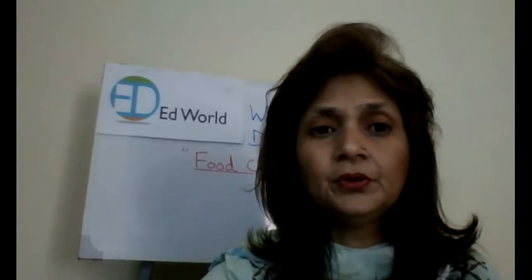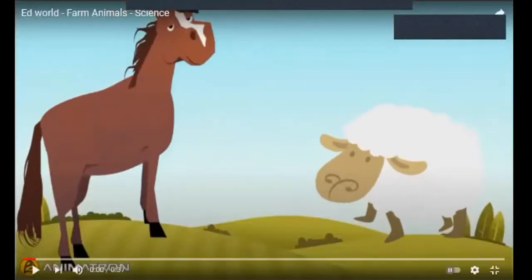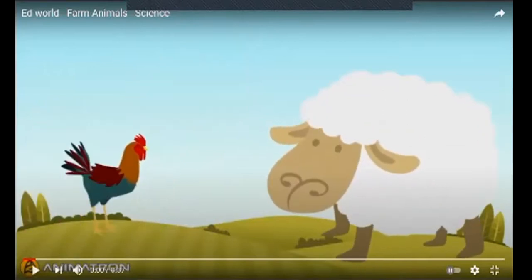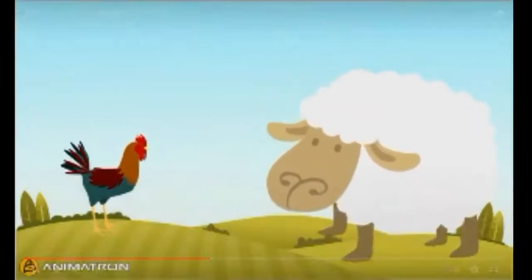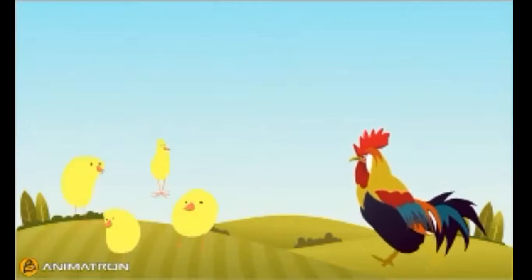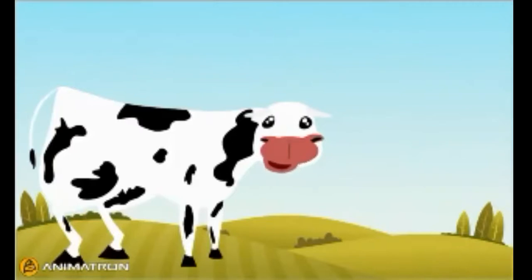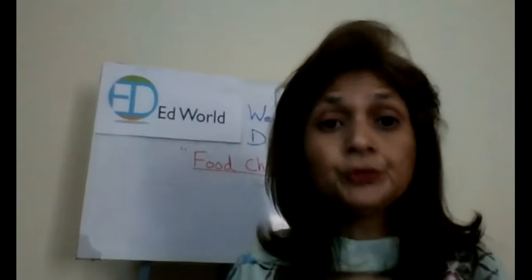Here you go. Can you all see my screen, children? In the video: I'm a horse — I take the farmers on the ride. I'm a sheep — they take my wool and they also have my meat. I'm a chicken — I give eggs and chicks. I'm a cow and I give milk, from which yogurt and cheese is made. So you have seen how these animals are useful and what they give you.